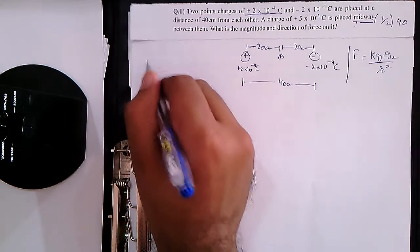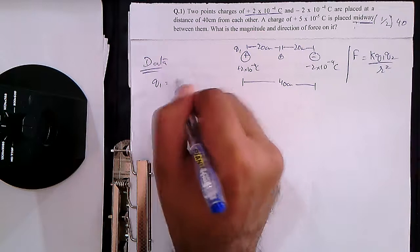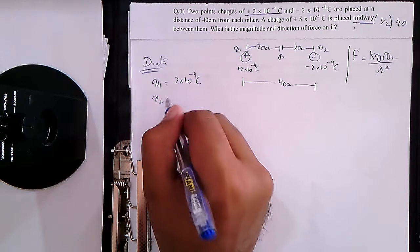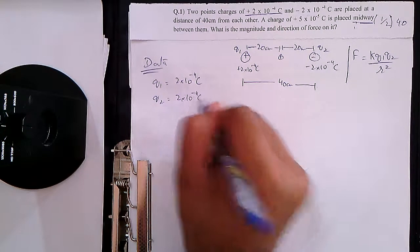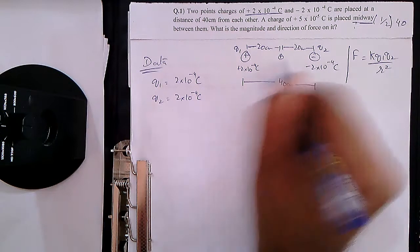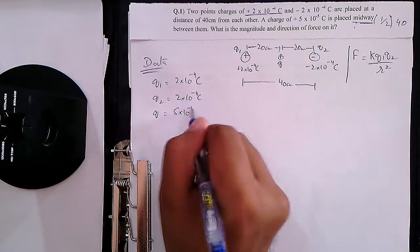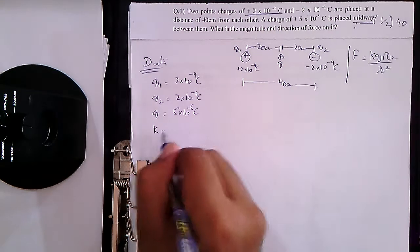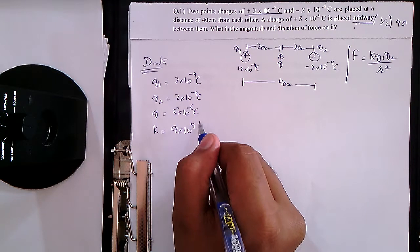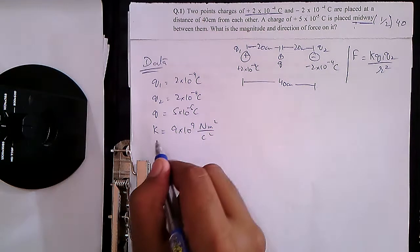Now let's start with the data. You can call this charge Q1, so Q1 is equal to 2×10⁻⁴ coulombs. The middle charge is Q2, equal to 5×10⁻⁵ coulombs. Then we have the constant K, whose value is 9×10⁹ Newton meter squared per coulombs squared.